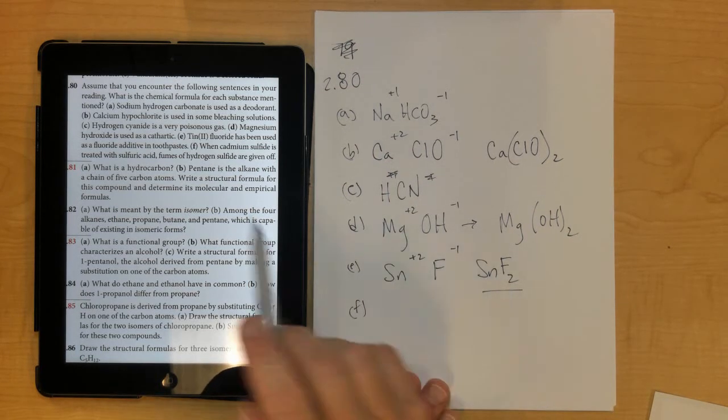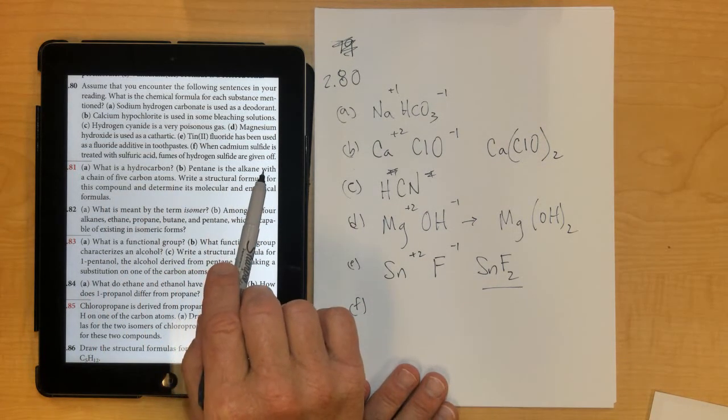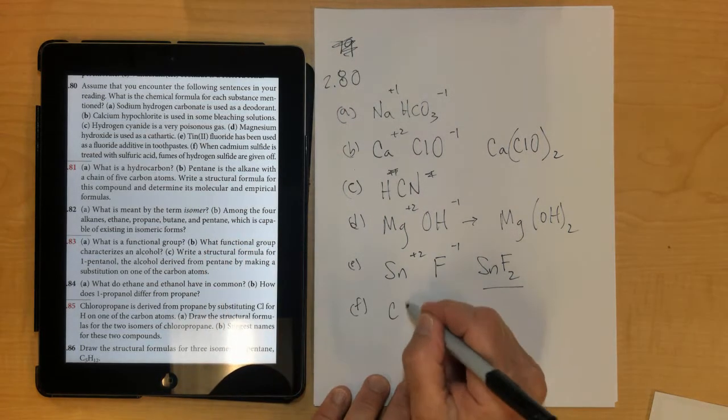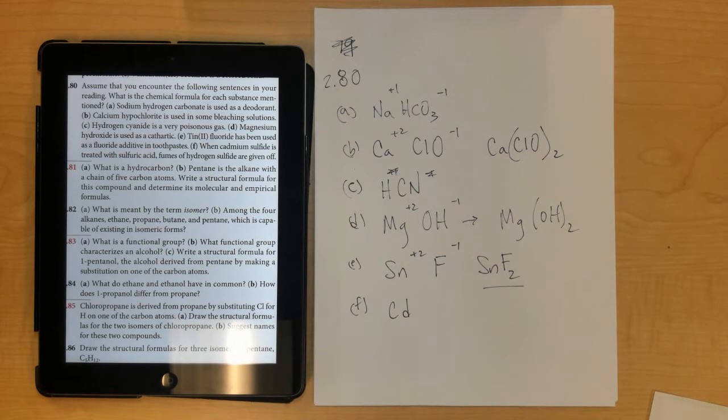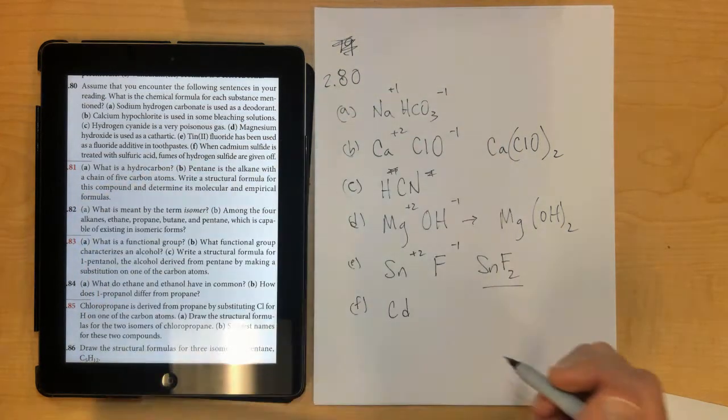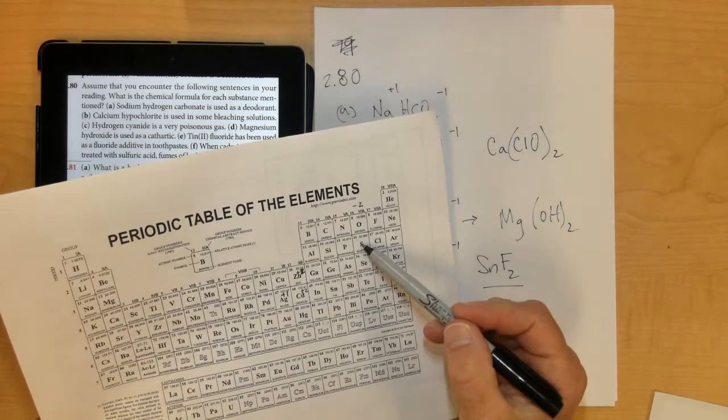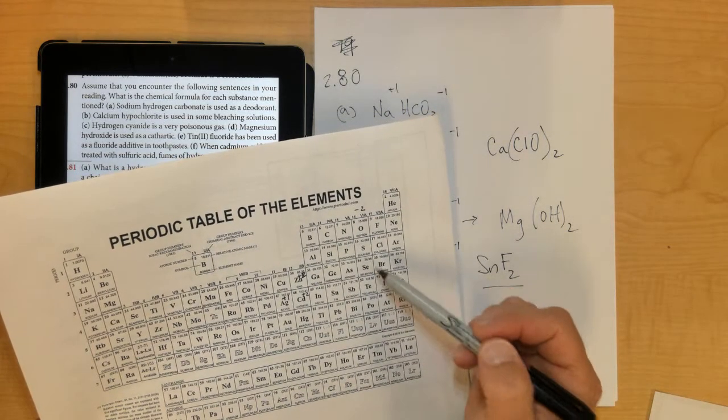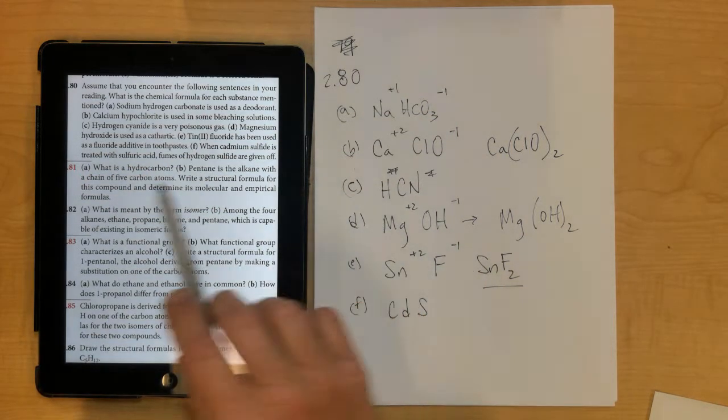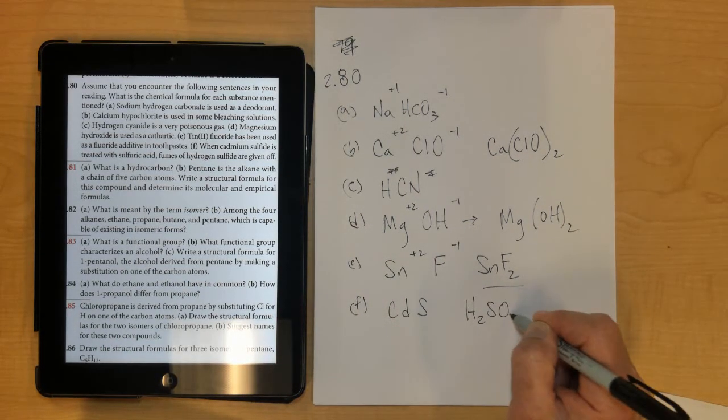And then letter F, when cadmium sulfide is treated with sulfuric acid, fumes of hydrogen sulfide are given off. So there's two of them actually that are right there. Cadmium sulfide is the first one, so if you don't have this on your periodic table yet, cadmium is always plus 2, so you can put that down. And it's cadmium sulfide, and sulfide just means it's the element sulfur, which is minus 2 almost all the time when it's with a metal, so there's cadmium sulfide. And then it says, so make sure it's sulfuric acid, which is H2SO4,